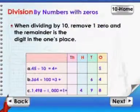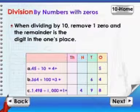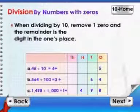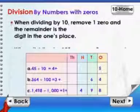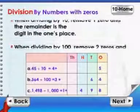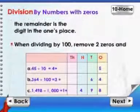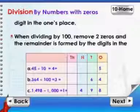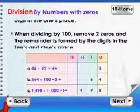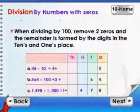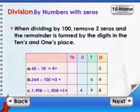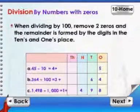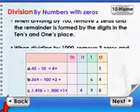Division by numbers with zeros. When dividing by 10, remove one zero and the remainder is the digit in the ones place. When dividing by 100, remove two zeros and the remainder is formed by the digits in the tens and ones place.